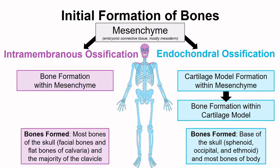From here, the mesenchyme can ossify or form bone in one of two ways. The more direct way forms bone directly in mesenchyme. This is how many of the bones of the skull and a portion of the clavicle form. The rest of the bones of the body use a route which requires a detour through a cartilage model — cartilage forms within mesenchyme, and then bone forms within that cartilage model.